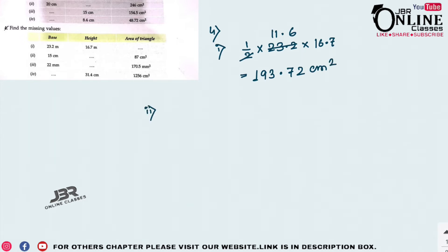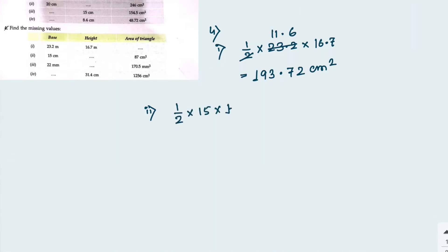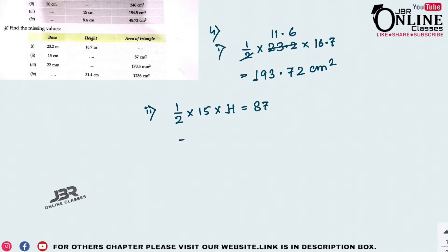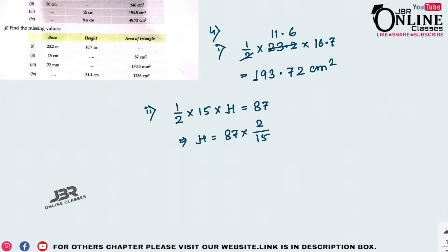Number 2: you know the base, find the height. ½ × base × height = 8.7, so h = 8.7 × 2 ÷ 15. The 2 moves to the right-hand side as multiplication, and 15 as division. 8.7 × 2 = 17.4, so 17.4 ÷ 15 = 11.6 as the second answer.